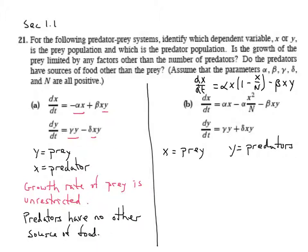And in that positive term, we can make the assumption that if x is 0, if there are no prey, the predators will continue to grow unrestricted, which means that they have another food source. And so, to answer our questions up here,